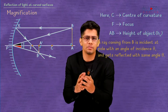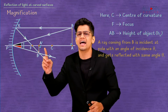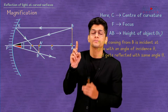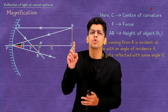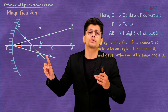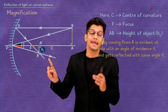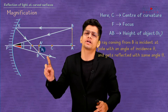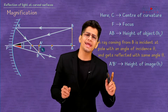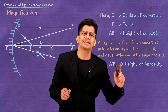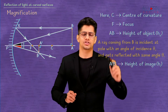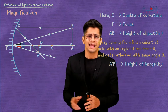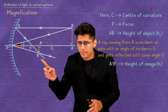The reflected rays meet at a point after reflection, where the image is formed. We name the image as A'B'. Just as the height of the object is denoted by h subscript o, the height of the image A'B' is denoted by h subscript i.